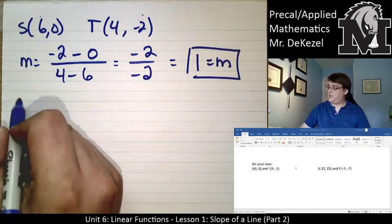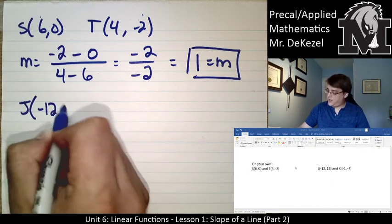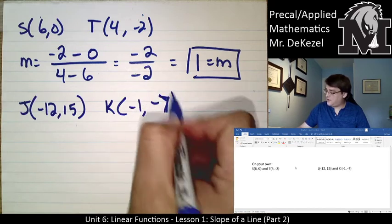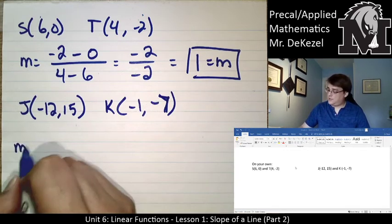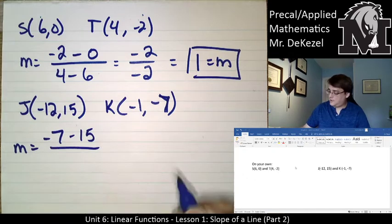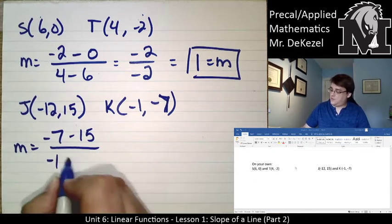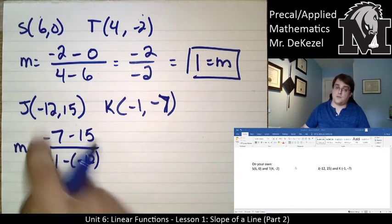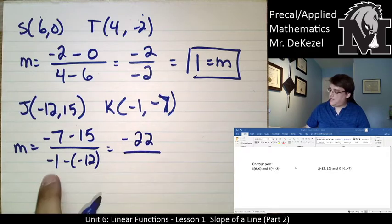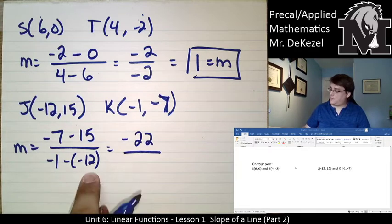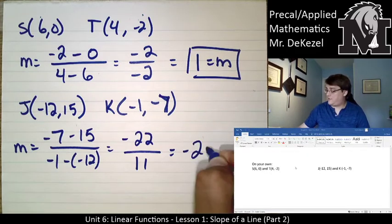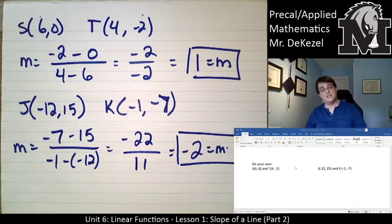That easy. We have the next point J, which is -12, 15, and K, which is -1, -7. That's a gross 7, but that's okay. Slope is equal to y2, -7, minus y1, which is 15. And then x2 is -1, minus a -12 for our x1 value. It's equal to, so this looks like -22, divided by -1, plus 12, that is 11. 22 divided by 11 is 2, so that's -2 for our slope.